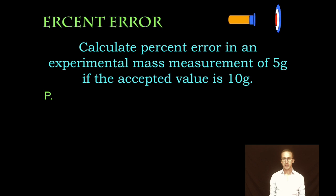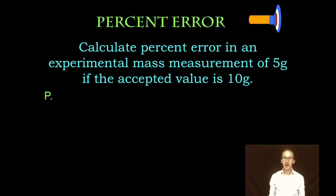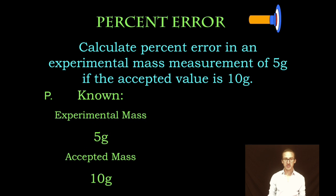So for example, if I were taking the mass of something and the accepted value was 10 grams, but for whatever reason when I measured that mass in the lab, I only got a mass of 5 grams, the pieces or the parts here: my experimental mass, 5 grams—that's what I got in the lab. Accepted mass, what it should be: 10 grams.